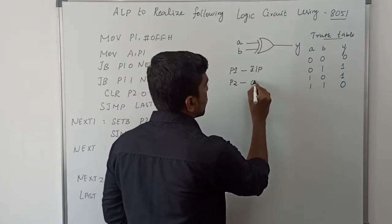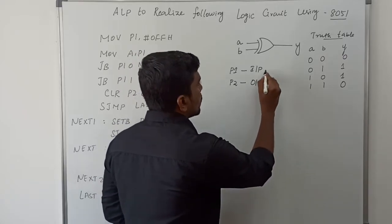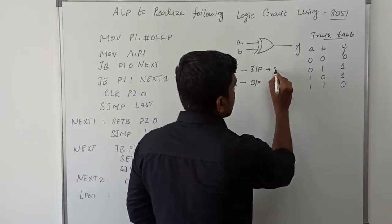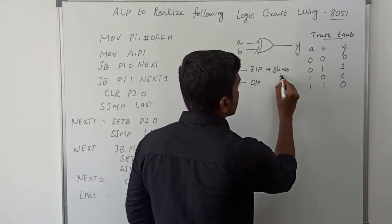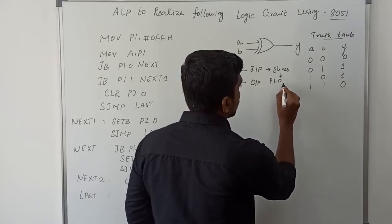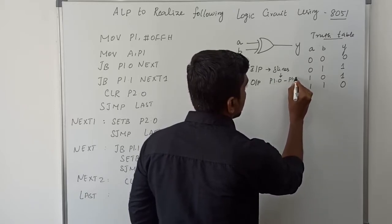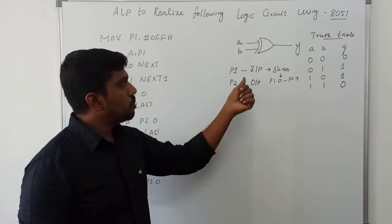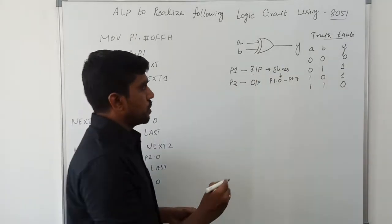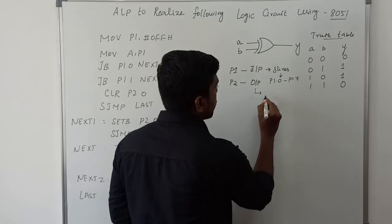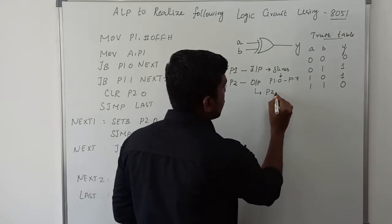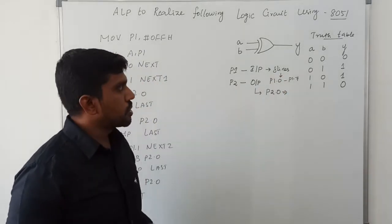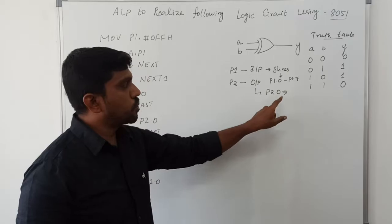Port 1 acts as the input port and Port 2 acts as the output port. Port 1 has eight lines, referred to as P1.0 to P1.7. In this program I concentrate only on P2.0 as the output line, so Y is connected to P2.0.